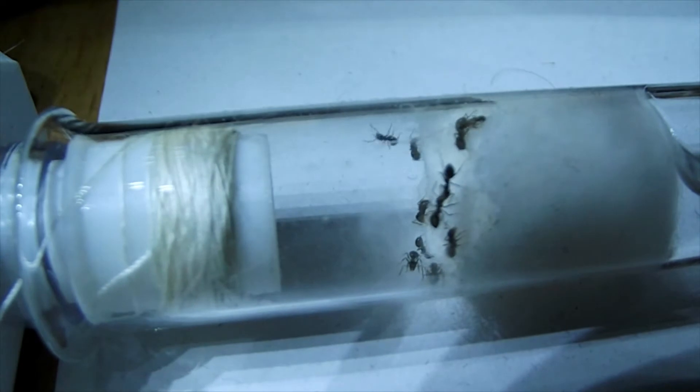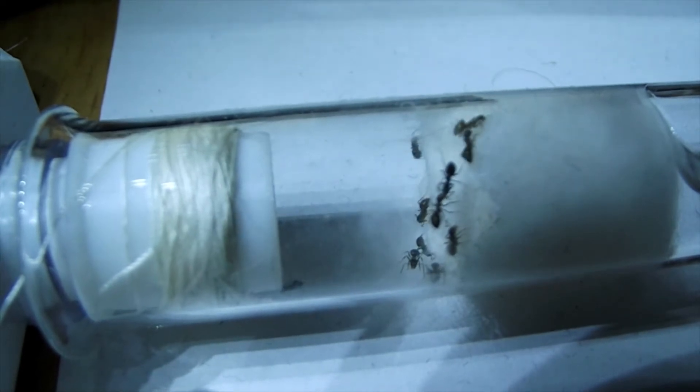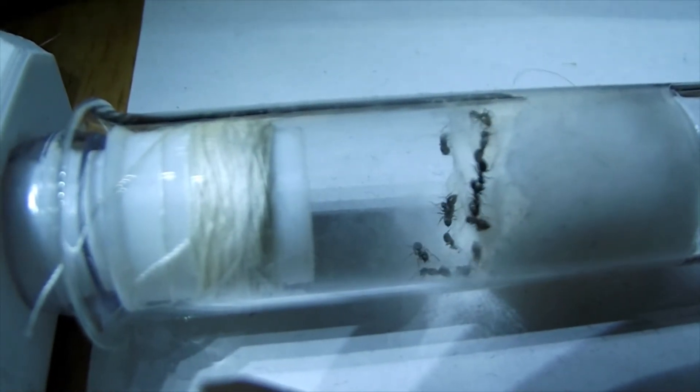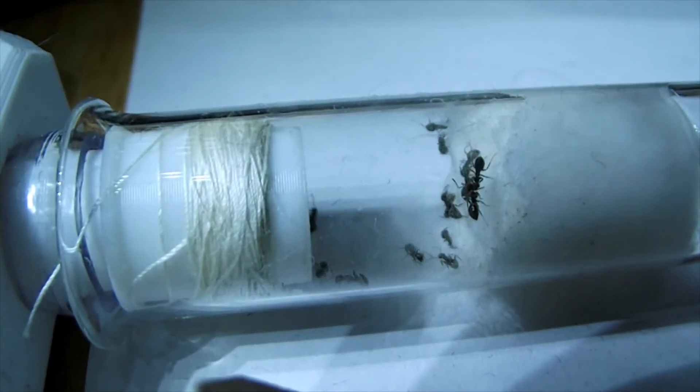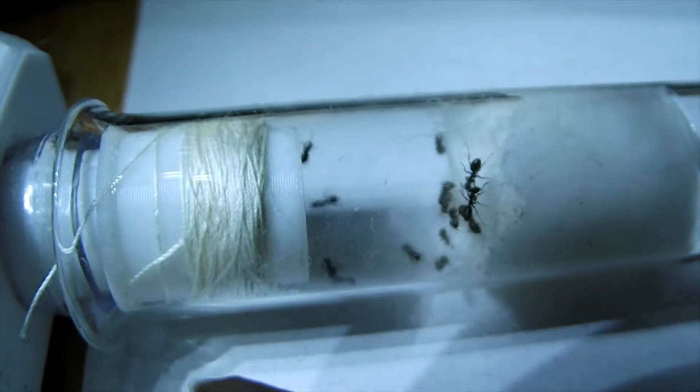Now your queen is in a water test tube so she's fine. Ants, the way they are able to eat, they're basically little suction machines so they can suck the water through the cotton wool. They're absolutely fine in that test tube and in the heat they'll be fine.